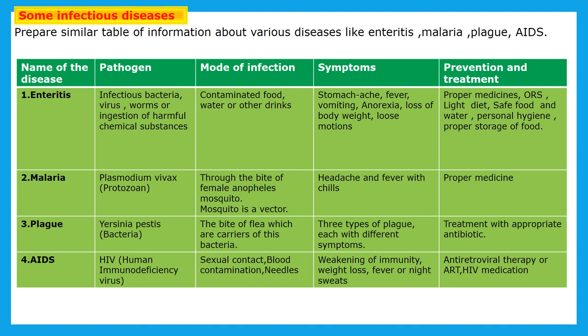Next is malaria. This is caused through protozoa — Plasmodium vivax. Mode of infection is through the bite of the female Anopheles mosquito, which is a vector — from that mosquito only the disease can spread. Symptoms are headache and fever with chills — fever coming with chills is the main symptom for malaria. Prevention and treatment is proper medicine under the guidance of a doctor or physician.